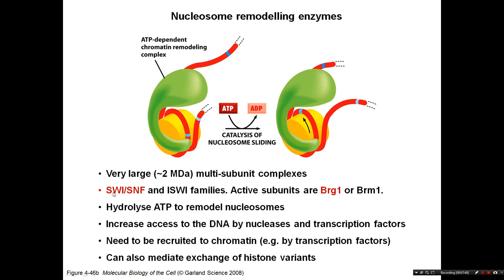There are a few different families of remodeling complexes — SWI/SNF and ISWI (imitation switch) are the two main families, and within those complexes the active subunits are known as BRG1 or BRM1. They use ATP to do this remodeling and increase access to DNA by transcription factors, nucleases, or anything else that wants to bind. They can also exchange histone variants — for example swapping in different forms of H3 or H2A. They don't bind DNA themselves; they need to be recruited to chromatin, for example by a sequence-specific transcription factor that recruits a nucleosome remodeling enzyme to reposition the nucleosome.